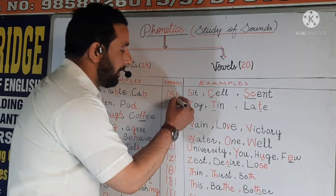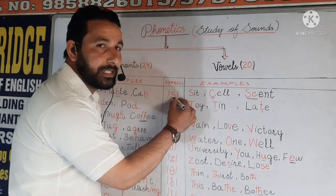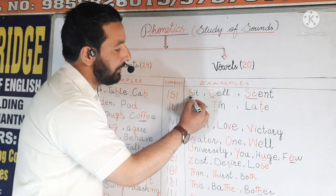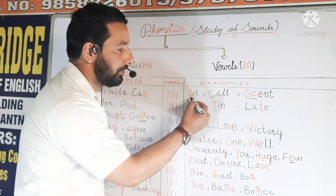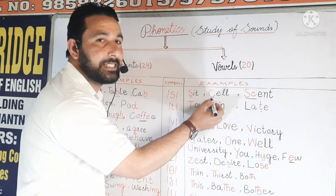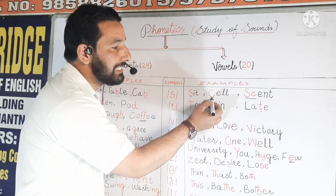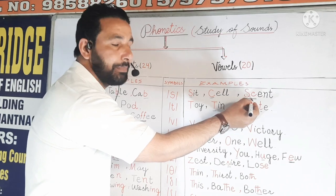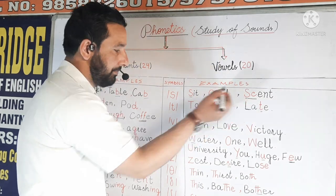Carrying on, next is S. This is the sound S. For example, we have 'sit', we have 'sell' — this is sound S. And next example is 'sent' — this is also sound S.